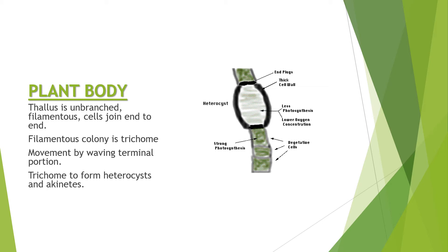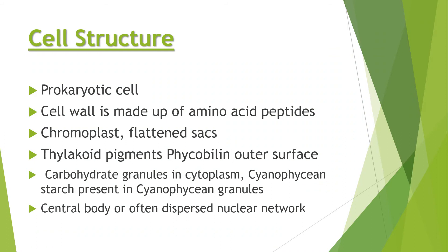The movement of Anabaena occurs via waving of the terminal portion — the terminal portions form a slight waving motion, allowing the whole organism to move from one place to another. The trichomes form heterocysts and akinetes, which are types of cells present in the filamentous plant body.